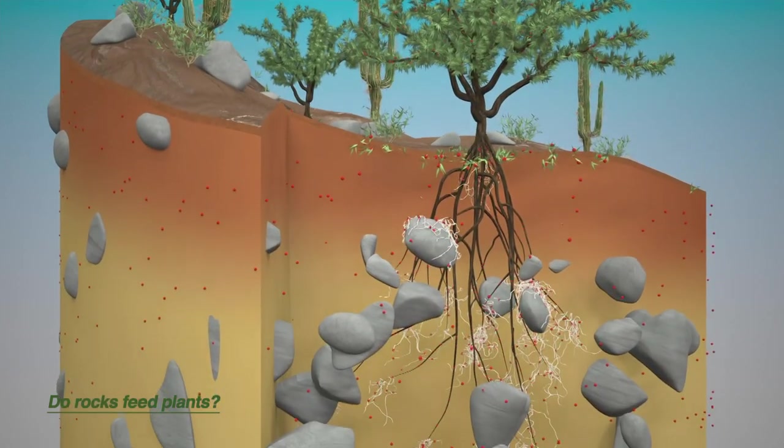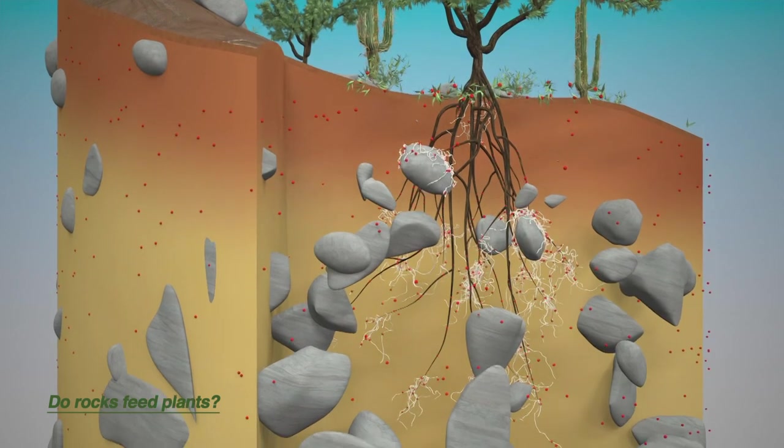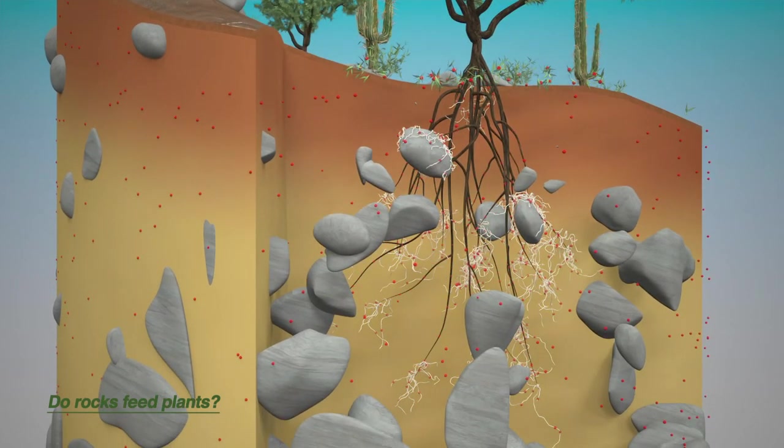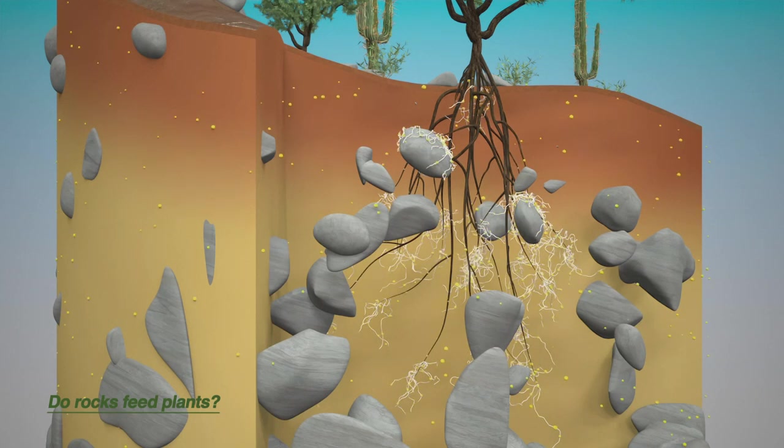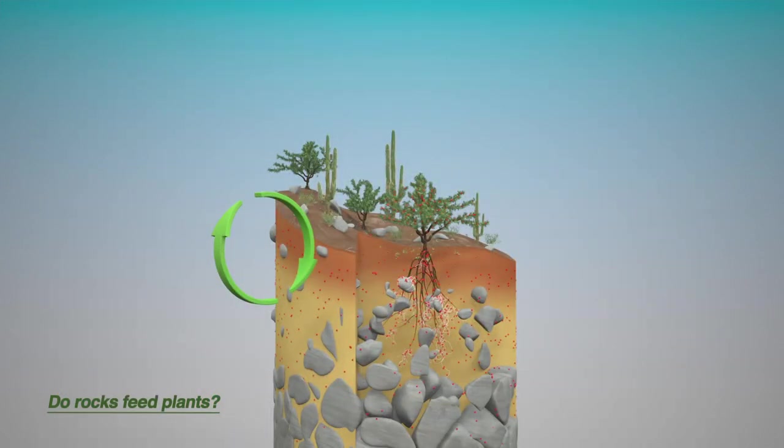Since there is less vegetation, less carbon is also transferred to roots and fungal hyphae. The entire nutrient cycle is slower and nutrient fluxes are lower. This ecosystem is acquiring because it draws its mineral nutrients mainly from the rock.